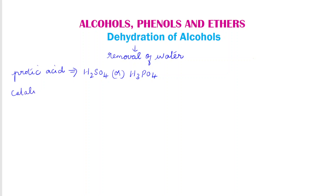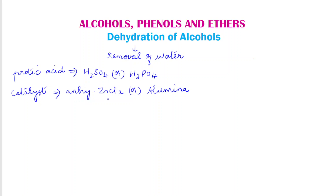We can also use a catalyst for dehydration. Catalysts like anhydrous zinc chloride or alumina can be used. So when alcohol is treated with protic acids like sulfuric acid or phosphoric acid, or with catalysts like anhydrous zinc chloride or alumina, a molecule of water is removed from the alcohol. We will write a general reaction representing this removal.